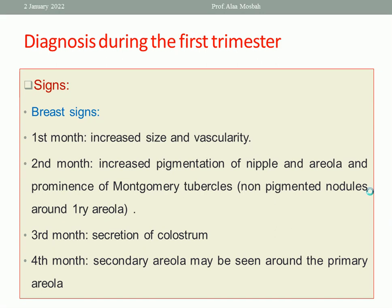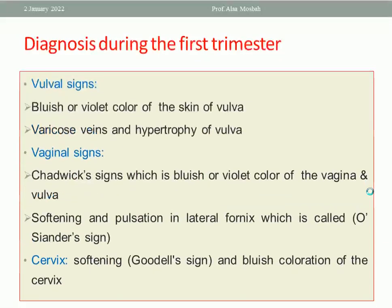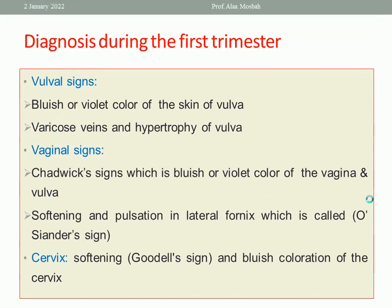What about the signs — breast signs? In the first month, there is increased vascularity on the surface of the breast. In the second month, there is increased pigmentation of the nipple and the areola, and the appearance of tubercles called Montgomery tubercles around the primary areola. At the third month, there is sometimes secretion of colostrum, and you should counsel the patient about that. At the fourth month, a secondary areola may be seen — a pigmented area around the primary areola.